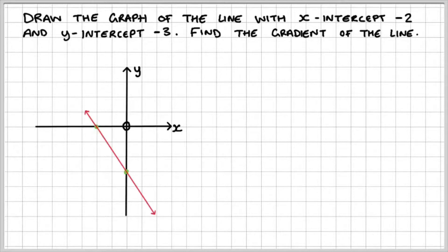So let's draw a straight line through and label the coordinates. We have (-2,0) and (0,-3).